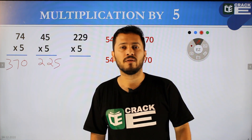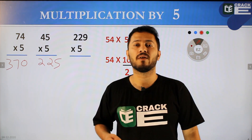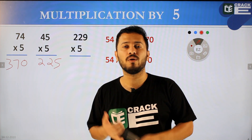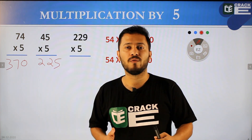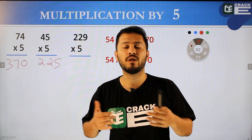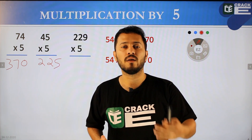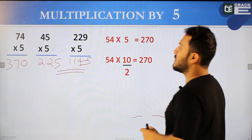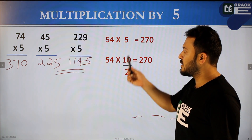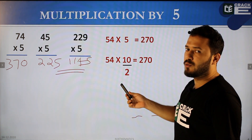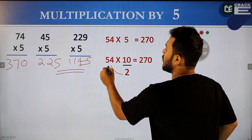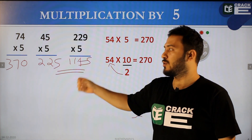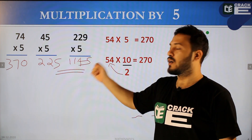229 multiplied by 5: take 229 divided by 2, which gives 114.5. Then multiply by 10 to get 1145. So the technique is: to multiply any number by 5, divide by 2 and then multiply by 10. For example, 74 divided by 2 is 37, giving 370; 45 divided by 2 is 22.5, giving 225; 229 divided by 2 is 114.5, giving 1145.